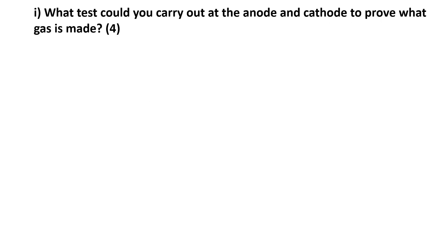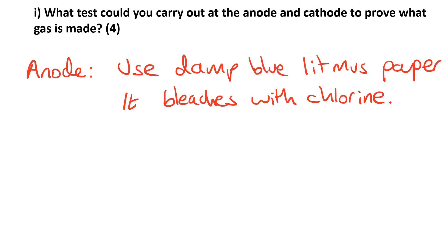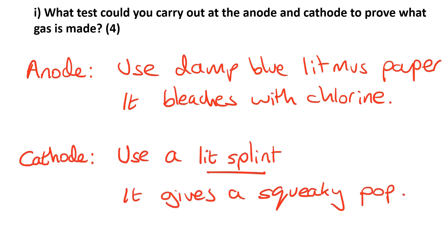The last question: what test could you carry out at the anode and cathode to prove what gas is made? At the anode you'd use damp blue litmus paper and it bleaches with the chlorine gas—in other words it takes the color out of the litmus paper. At the cathode hydrogen is being made, so you'd use a lit splint and it gives a squeaky pop.